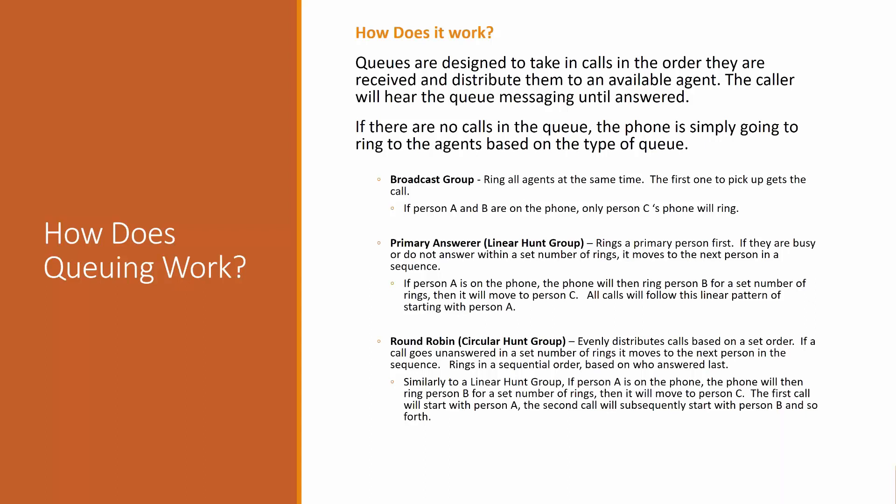The last approach is a round robin, which tries to more evenly distribute calls in a set order. If a call goes unanswered after X rings it moves to the next person in sequence, based on who answered last. So if A answered the first call, the second call starts at B, then once B is done the next call goes to C. It just tries to more evenly distribute those calls based on the order set within the system.